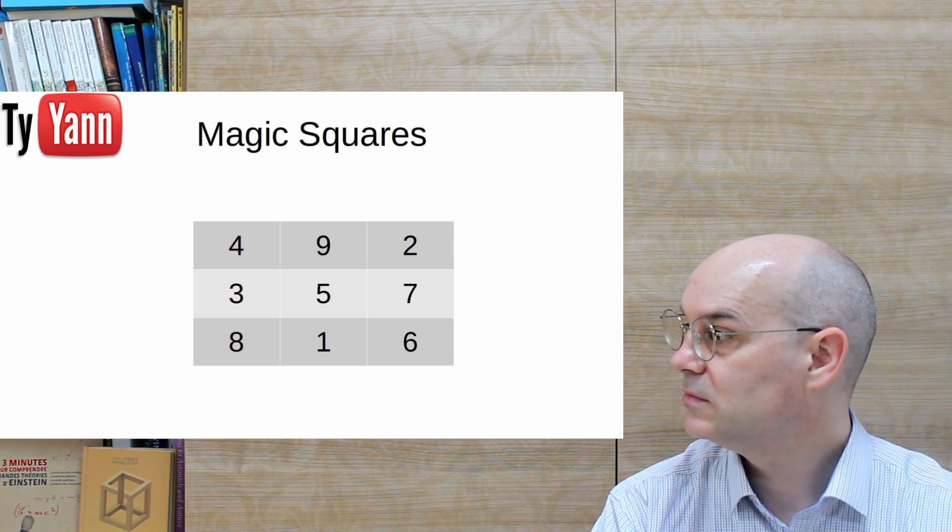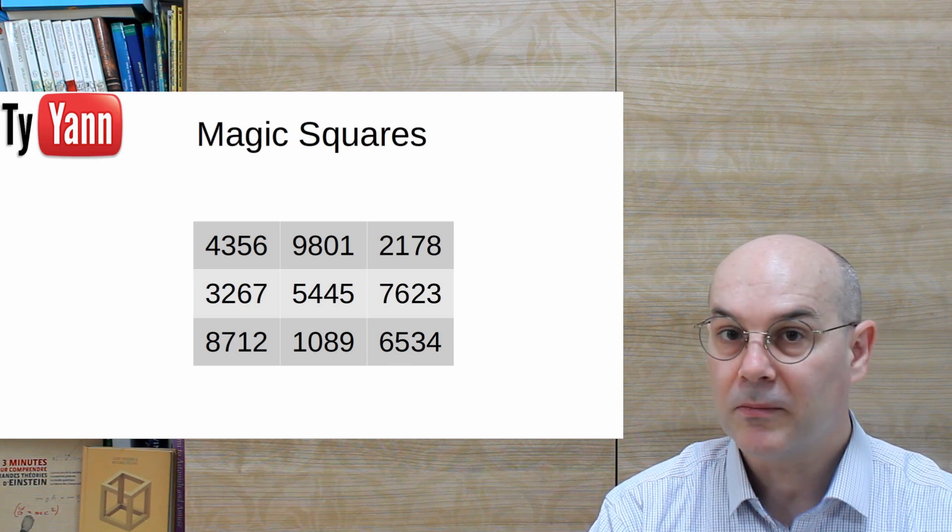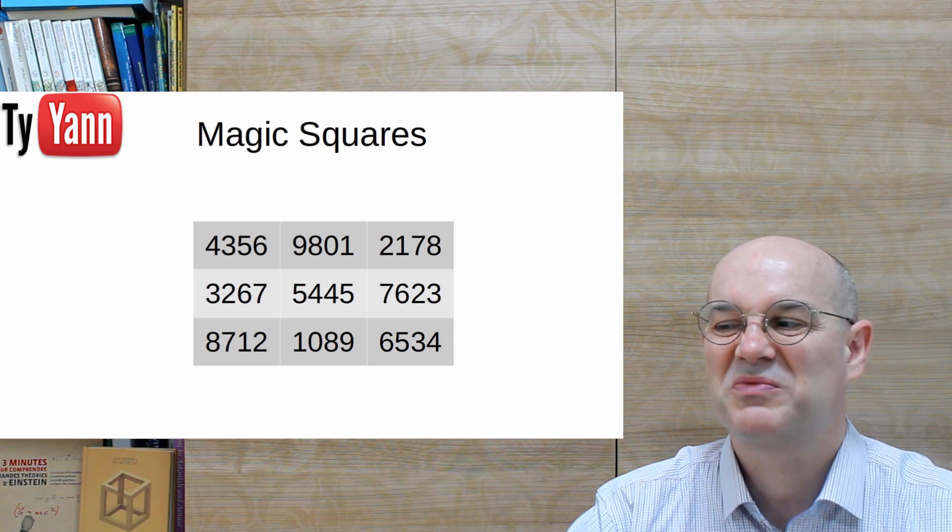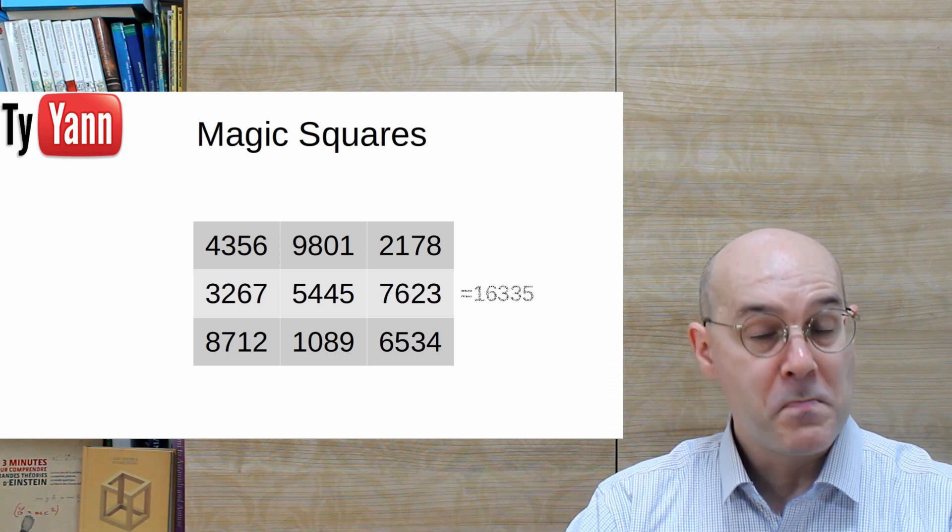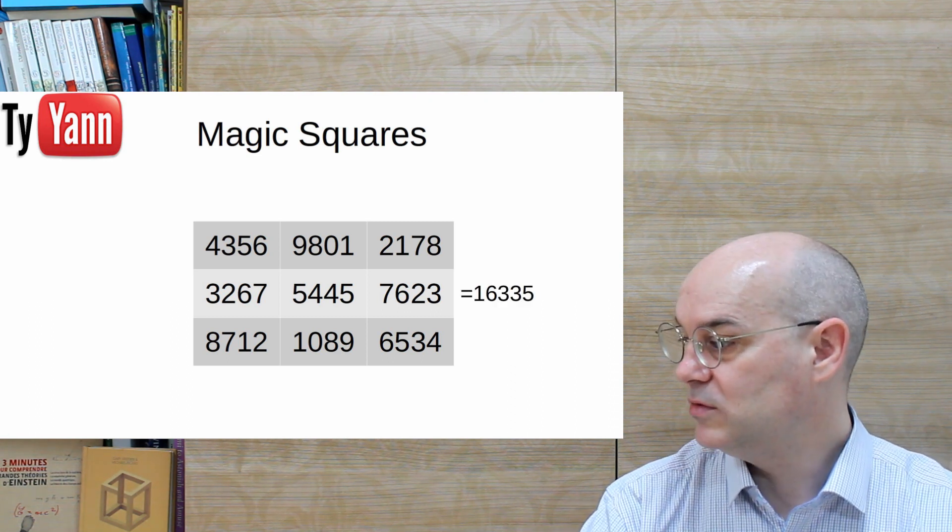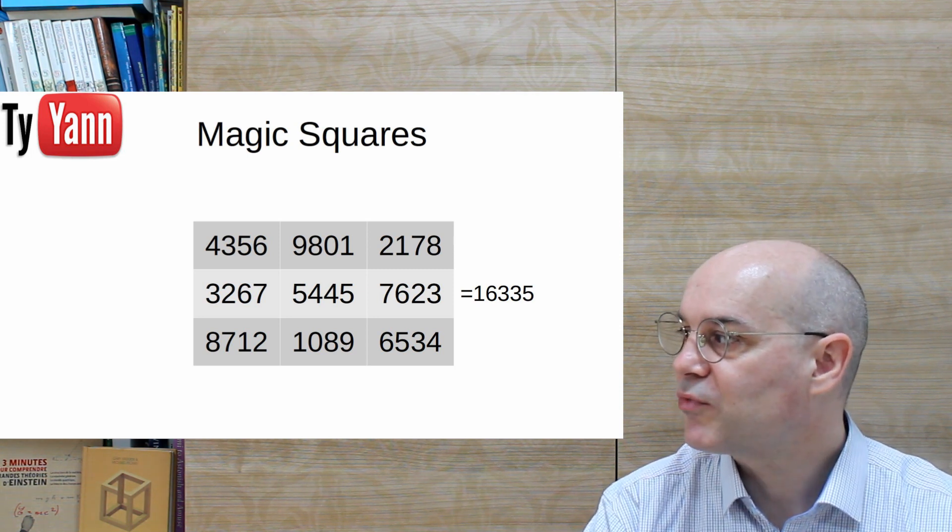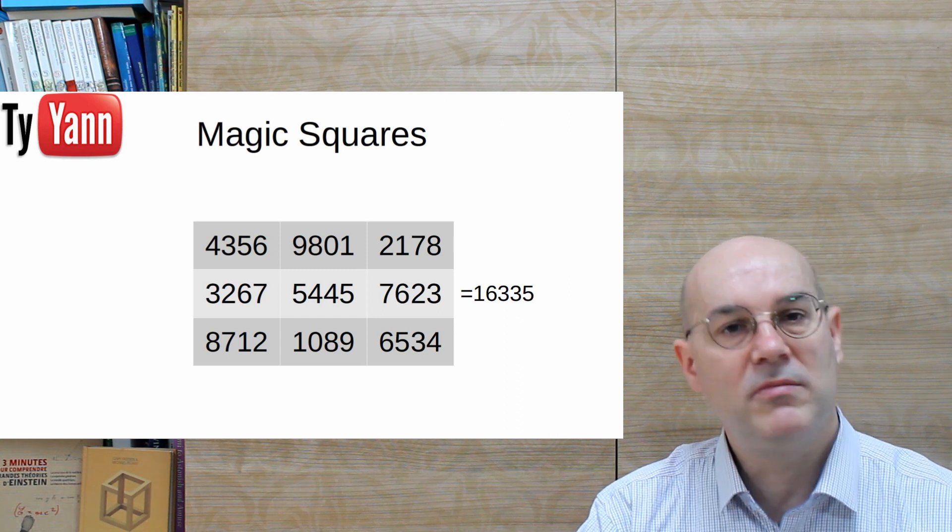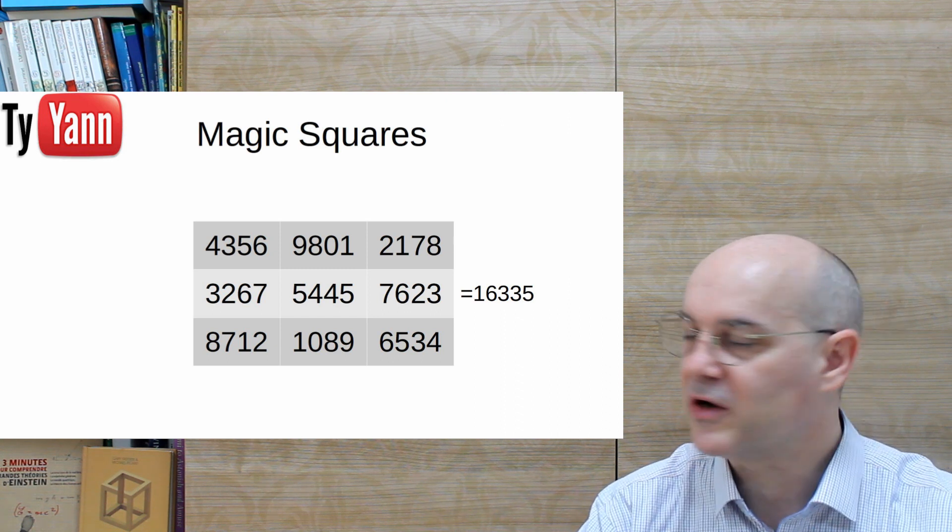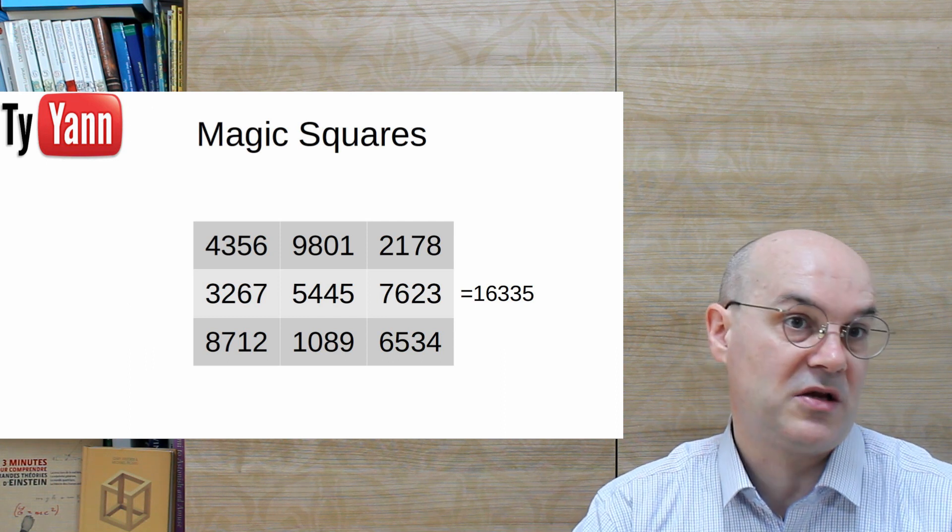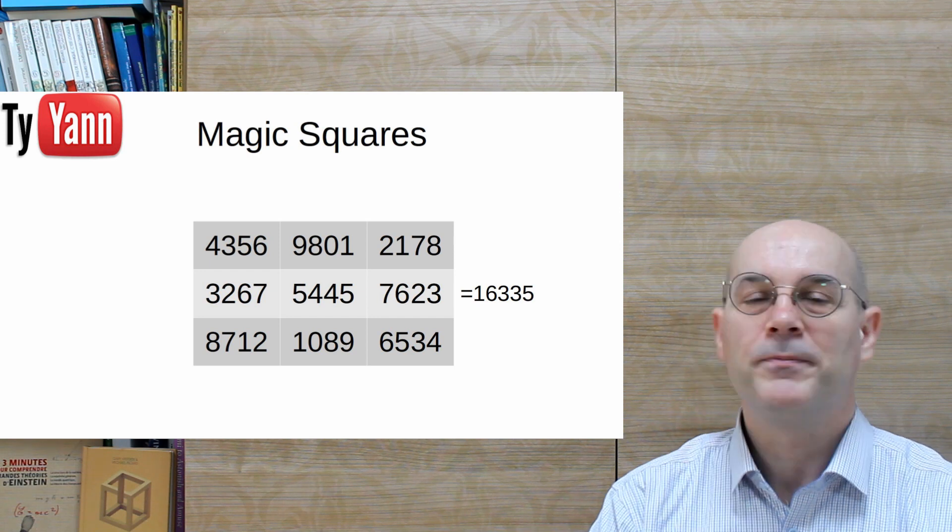So what happens if we take our magic square and multiply everything by 1089. Here it is. So obviously, we still have a magic square, because we just multiplied everything. So it's gonna get our magic constant multiplied 16,335. So it's not very surprising. You can do that with any magic square. You multiply by 2, multiply by 3, multiply by 1089, and you still get a magic square. Okay, nothing special with that.